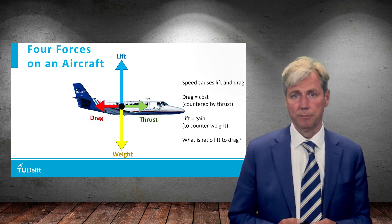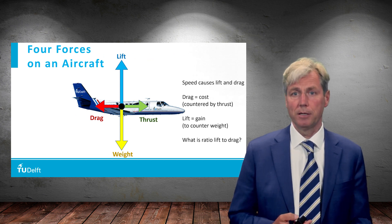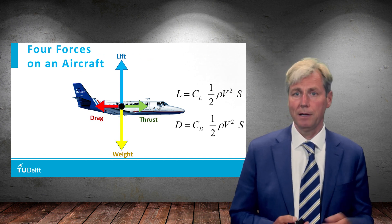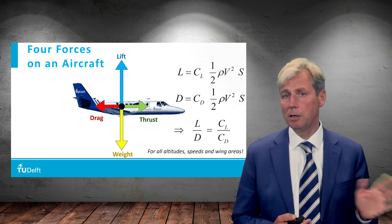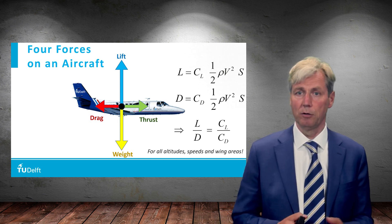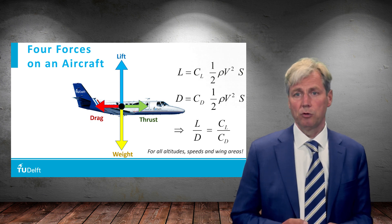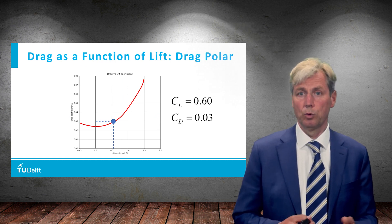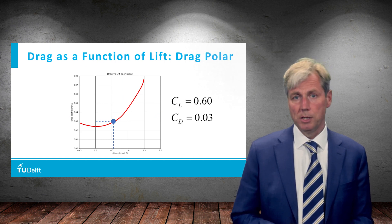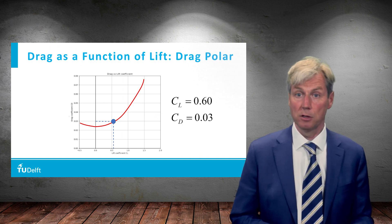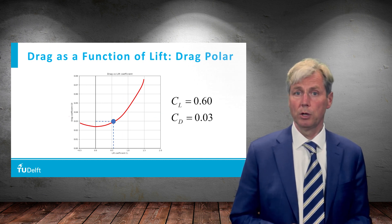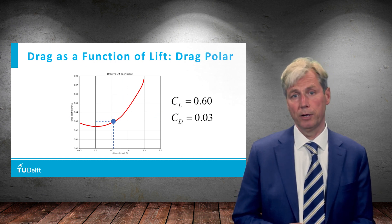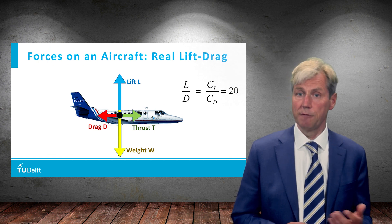Drag is the price to pay for lift, so what is the ratio between this price and the gain? If we divide lift over drag, the formulas are almost equal and we get just the ratio of the two coefficients — CL over CD — which means this ratio is independent of altitude or speed; it's given for a certain angle of attack, flow, and shape. Looking at a graph, we see the drag coefficient is much lower than the lift coefficient. For example, a lift coefficient of 0.60 costs only a drag coefficient of 0.03 — a factor of 20.